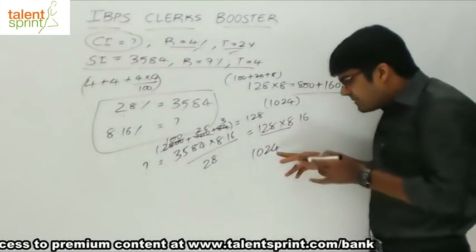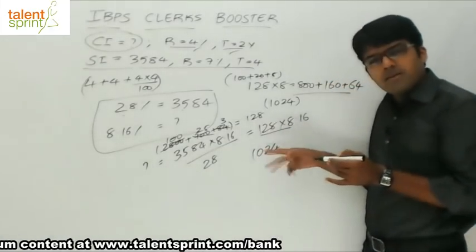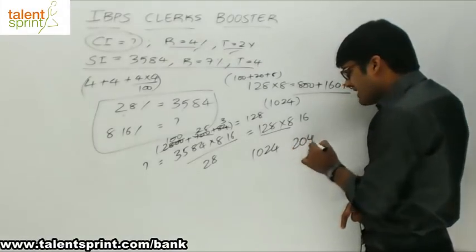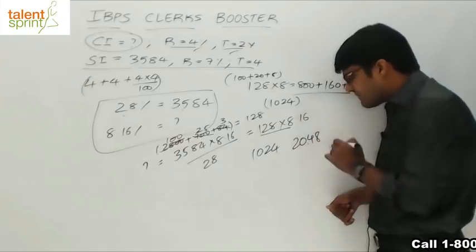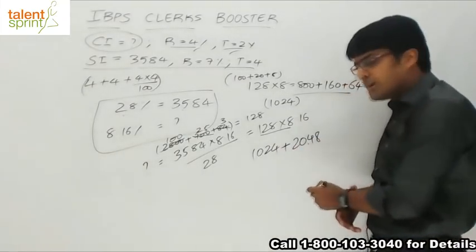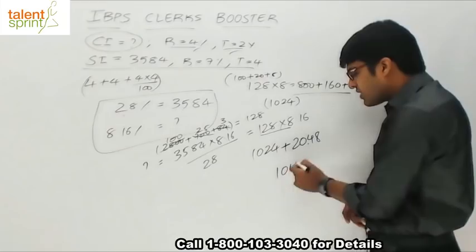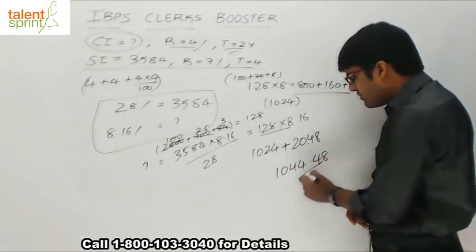So 128 into 16 will be double of this. What is double of 1024? 2048. But since it has got decimal after 2 places, I will give decimal after 2 places. 20.48. Add these 2 values. 1024 plus 20 is 1044.48 would be your answer.